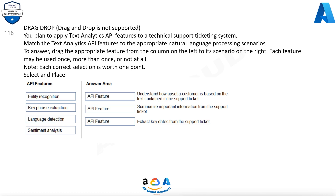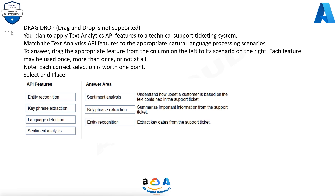API features: Entity recognition, Key phrase extraction, Language detection, Sentiment analysis. Sentiment analysis: Understand how upset a customer is based on the text contained in the support ticket. Key phrase extraction: Summarize important information from the support ticket. Entity recognition: Extract key dates from the support ticket.